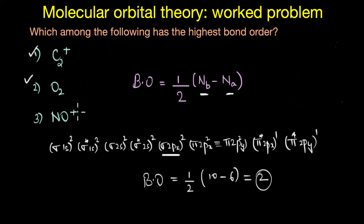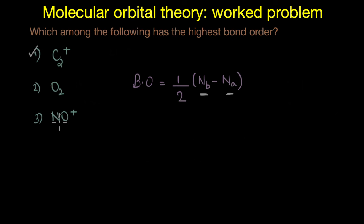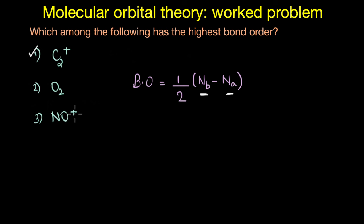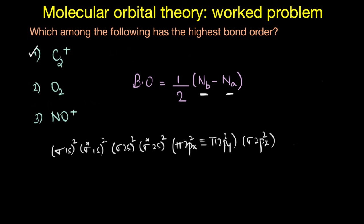Now let's look at the heteronuclear system NO+. The total number of electrons in NO+ equals the electrons in nitrogen plus oxygen minus one for the positive charge: 7 + 8 − 1 = 14. The order of filling of molecular orbitals in NO+ is similar to that of C2+ and not O2, because O2 has 16 electrons while NO+ has only 14 electrons.